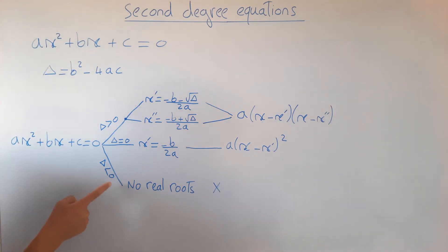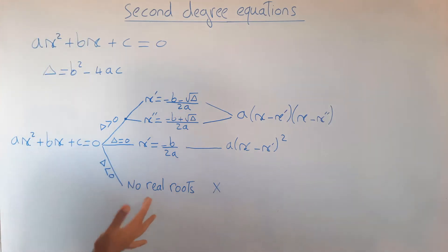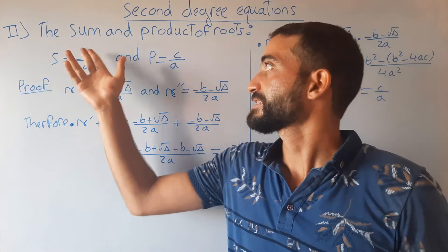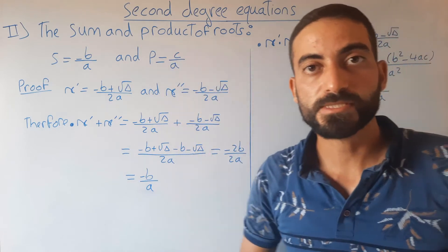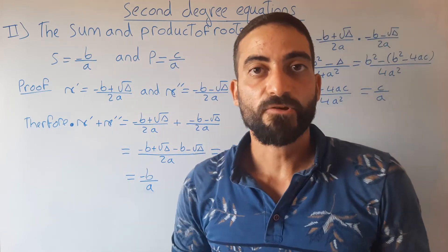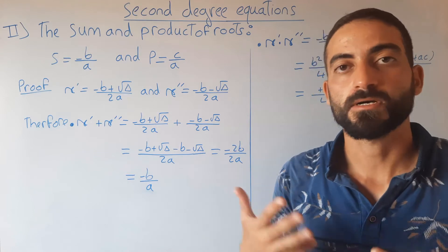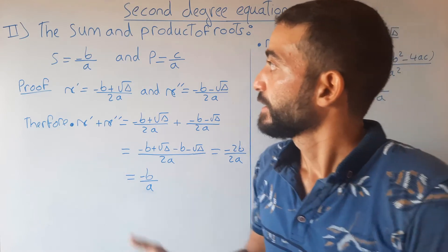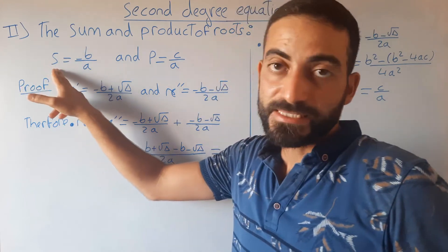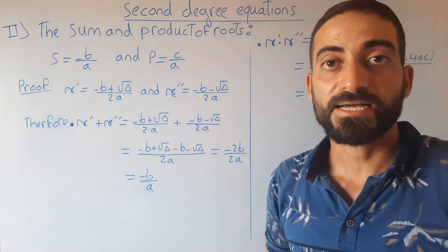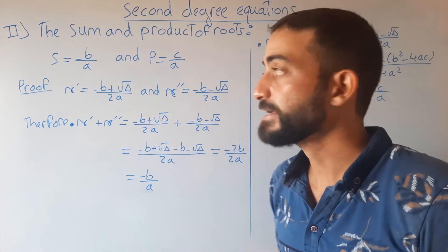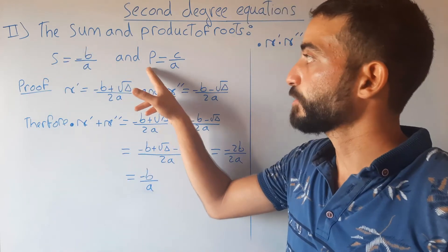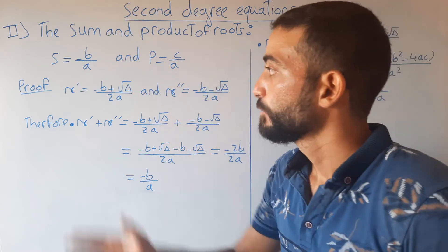If delta is negative, there are no real roots. The sum and product of roots: if the second degree equation has two distinct roots, the sum S and the product P are given by the formulas S = −b/a and P = c/a.